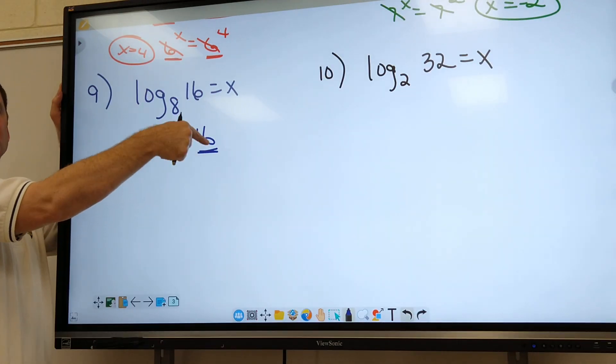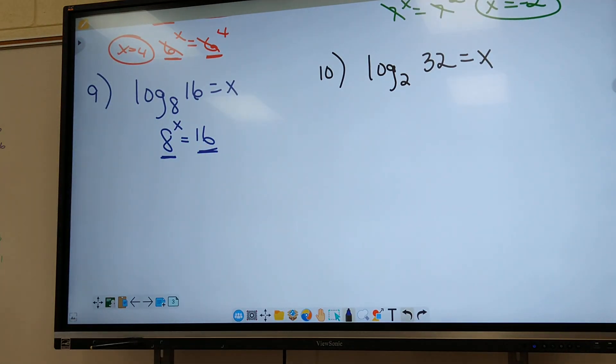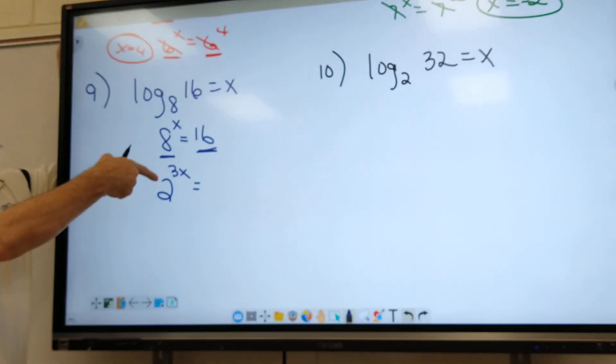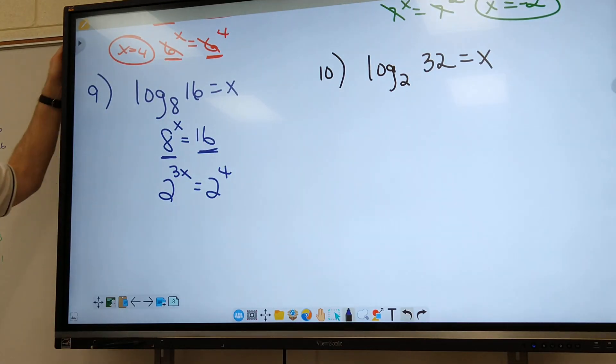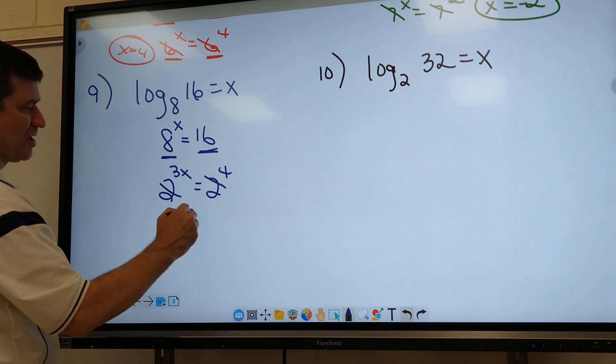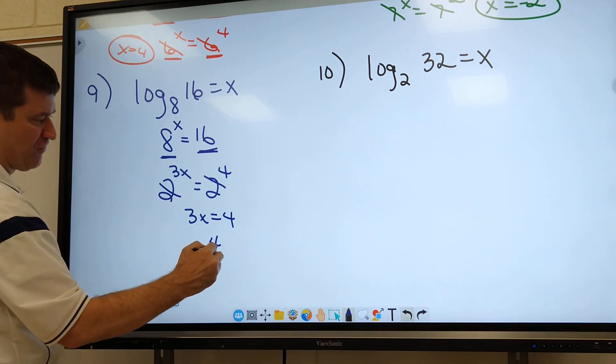So I got to break eight down and 16 down. To make it easy on you, just look up on the board. Where is eight and 16 at? Which column? Here's eight. It's two to the third. Here's 16. It's two to the fourth. So eight becomes two to the third. Leave the x up there. 16 becomes two to the fourth. Now work it out and get an answer. All right, so I'll mark out my twos. I got three x equals four. Divide by three. I got four thirds on that one.